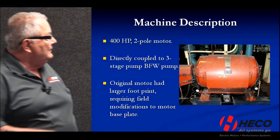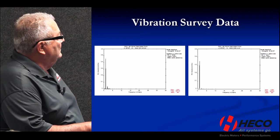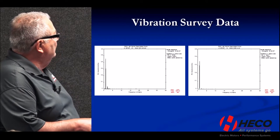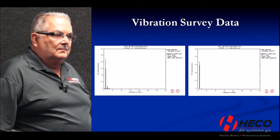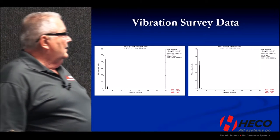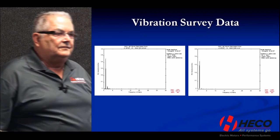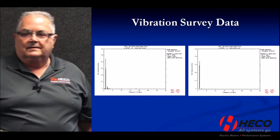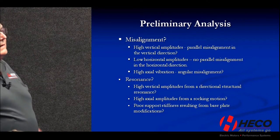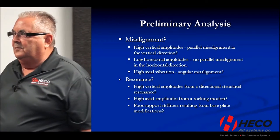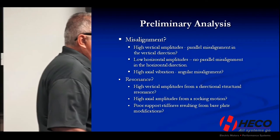We were taking readings with a data collector on both ends of the motor. The motor drive end vertical had 0.5 inches per second of vibration — higher than we would certainly like to see — all at one times the turning speed. The axial was 0.35 inches per second, again at the turning speed. Those were the highest peaks.